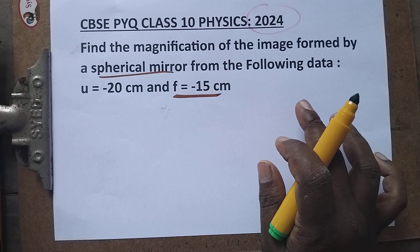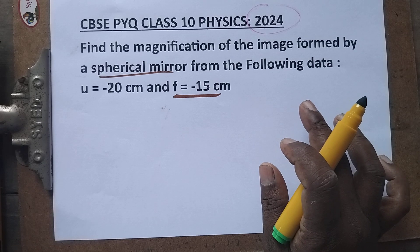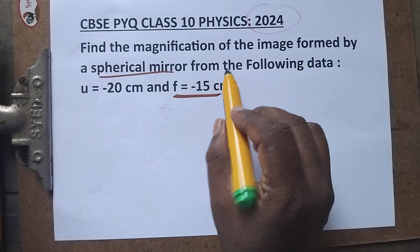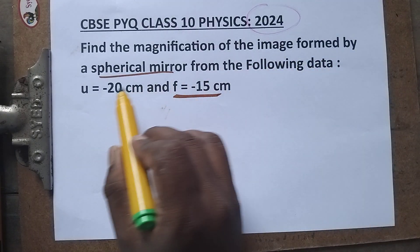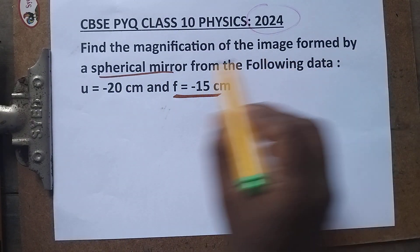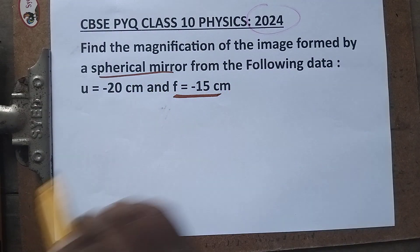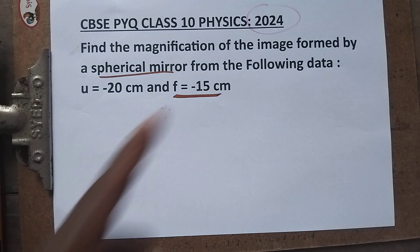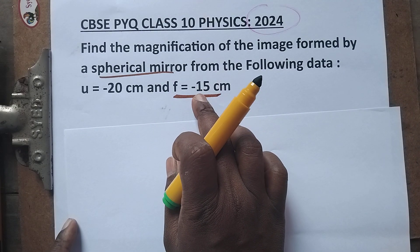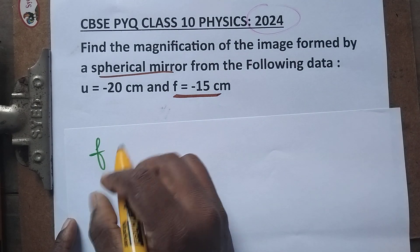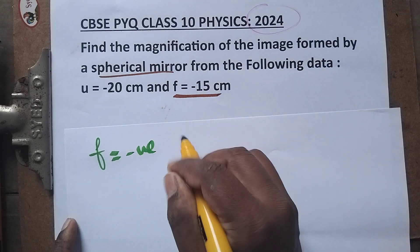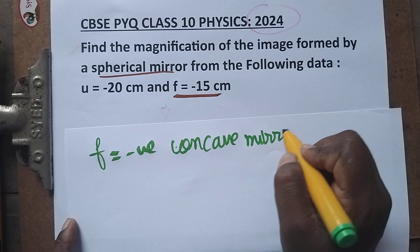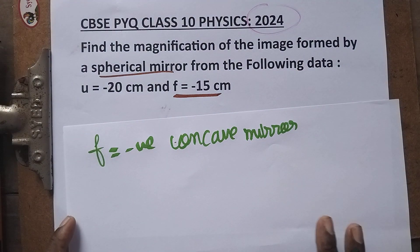The problem asks: find the magnification — that is the question mark. The image is formed by a spherical mirror. The given data is from 2024. The focal length is negative. When the focal length is negative, we know it is a concave mirror — we can easily identify this because of the negative focal length.